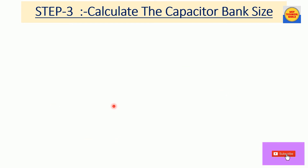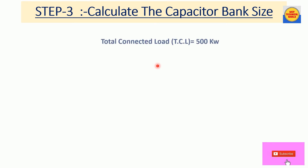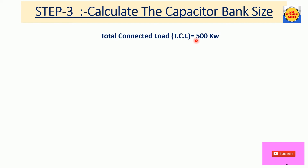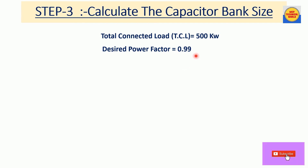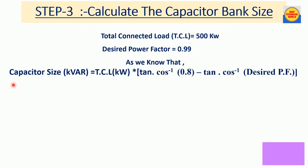Now move to Step 3. In this step, using the total connected load and the desired power factor value, we are going to calculate the capacitor bank size. We have total connected load of 500 kW from Step 1, and desired power factor of 0.99 from Step 2. You can change the desired power factor value as per your requirement.